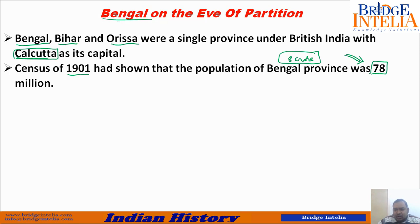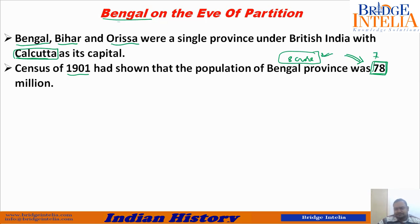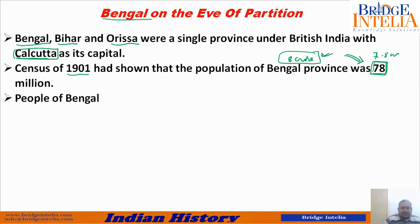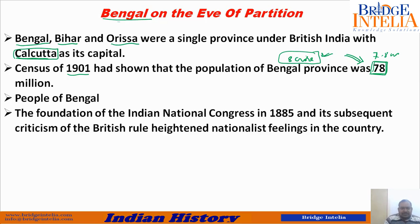This question has been asked in competitive exams: what was the population of Bengal when the Britishers decided to divide it? Options are mostly given as 78 million, but you may also get 8 crore — very close, because 78 million means 7.8 crore. So options are given like 8 crores or 7.5 crores.